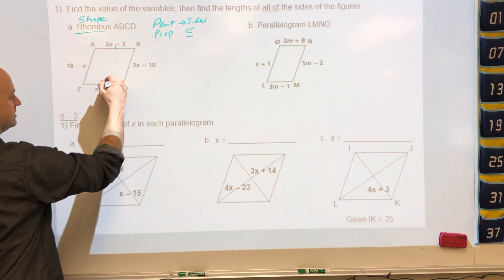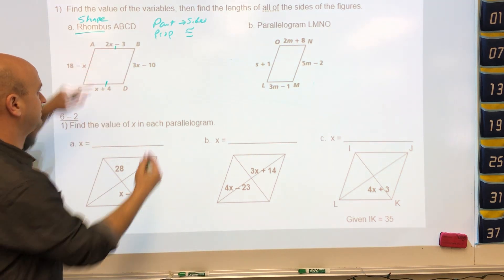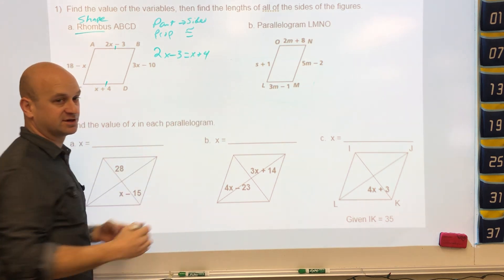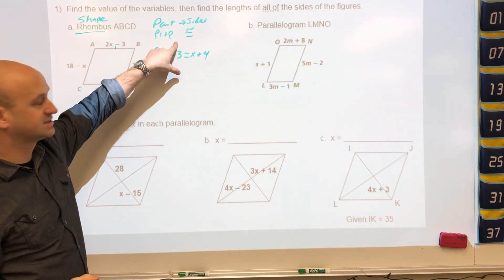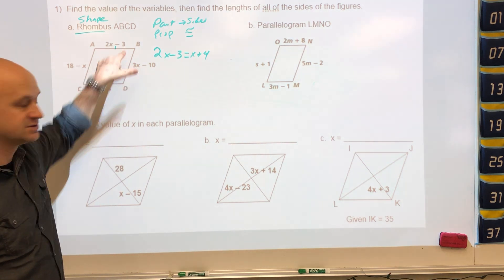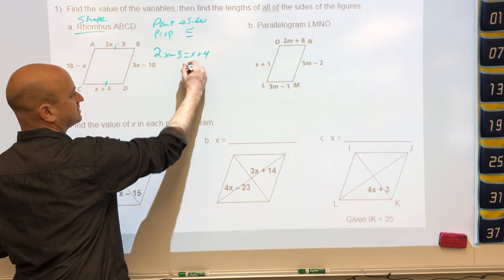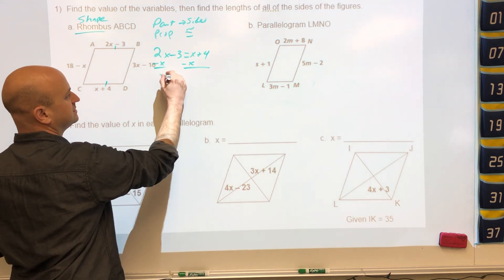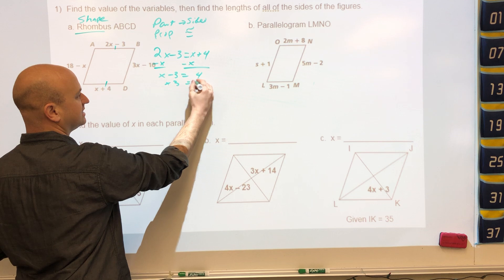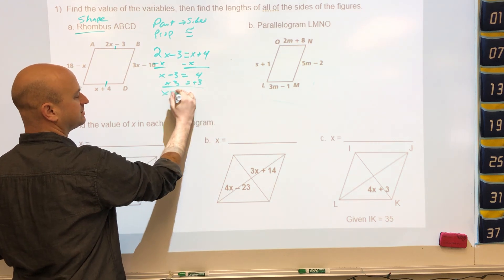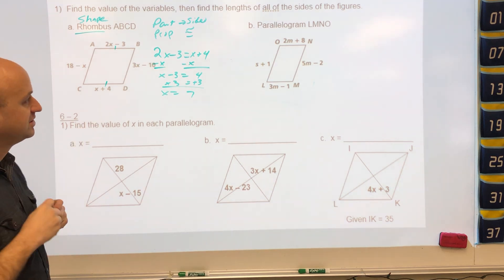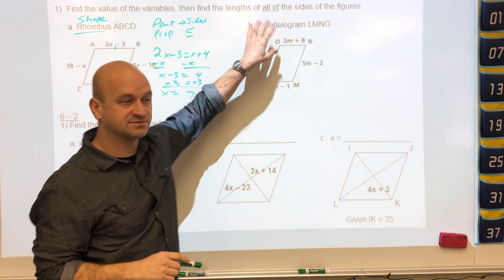Pick any two sides and set them equal. For example, 2x minus 3 equals x plus 4. We set them equal because the sides are congruent. When we subtract x from both sides and add 3 to both sides, we get x equals 7.